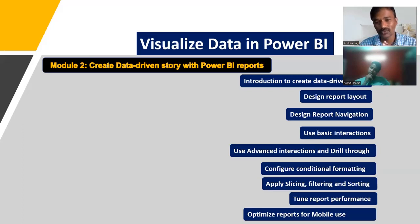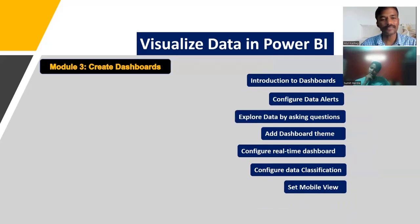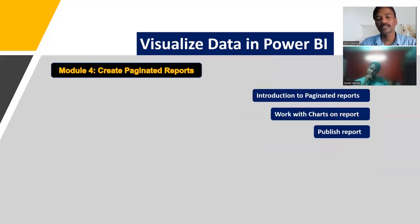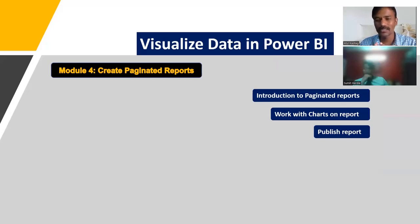There are many things to explore in visuals, which we will see in detail. The third module covers creating dashboards — a dashboard is a combination of different reports and tiles. We will see how to create reports, configure data alerts, apply dashboard themes, build real-time dashboards, and handle data classification. The last module in this section covers creating paginated reports: what they are, why they are needed, how to work with charts in them, and how to publish them.